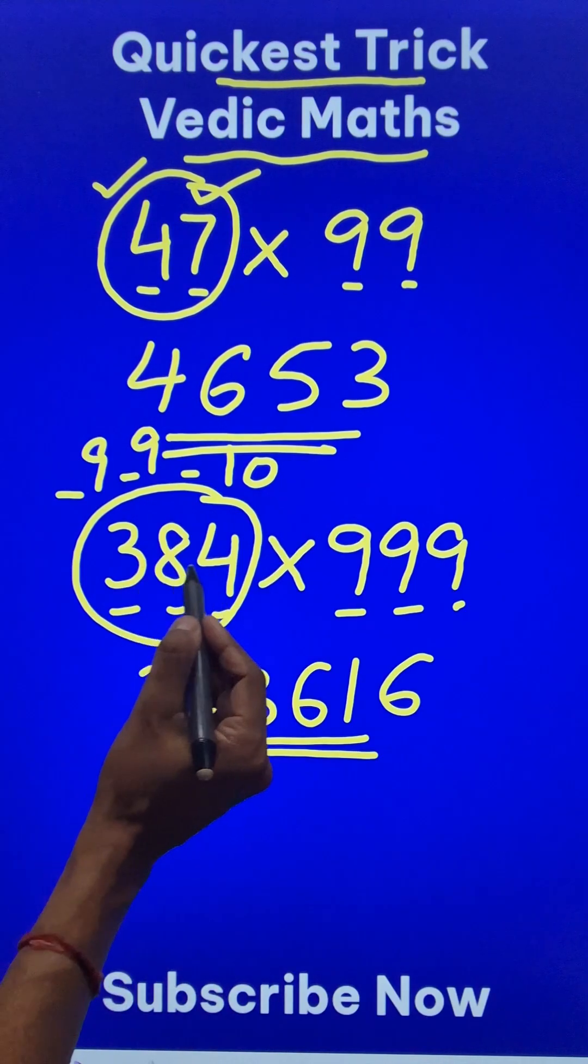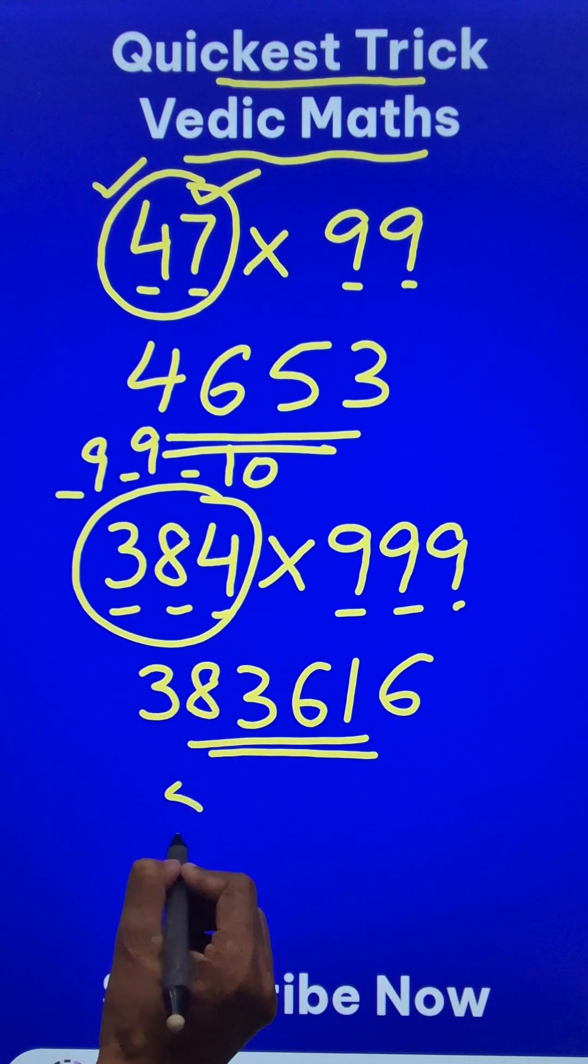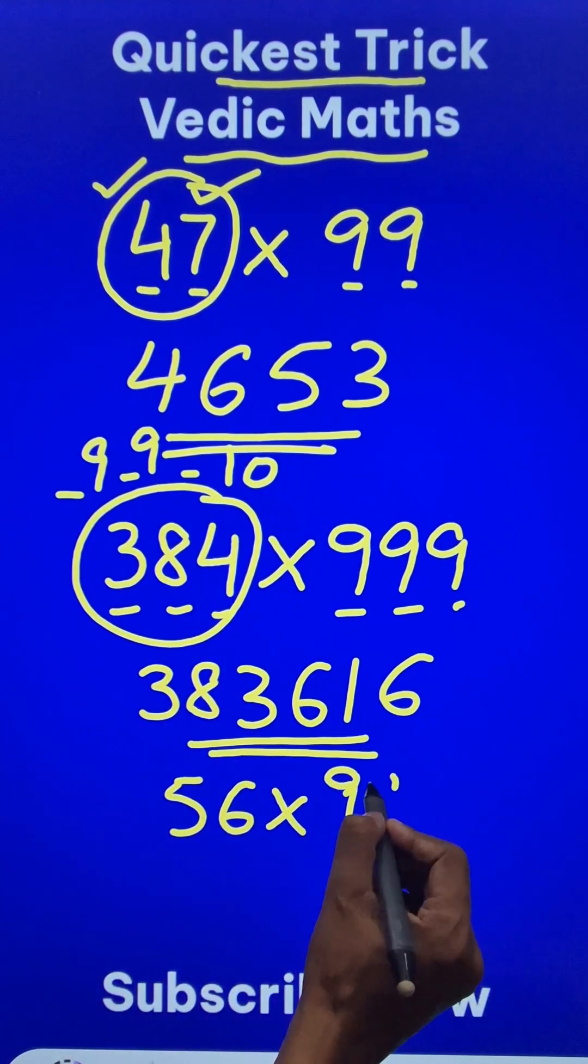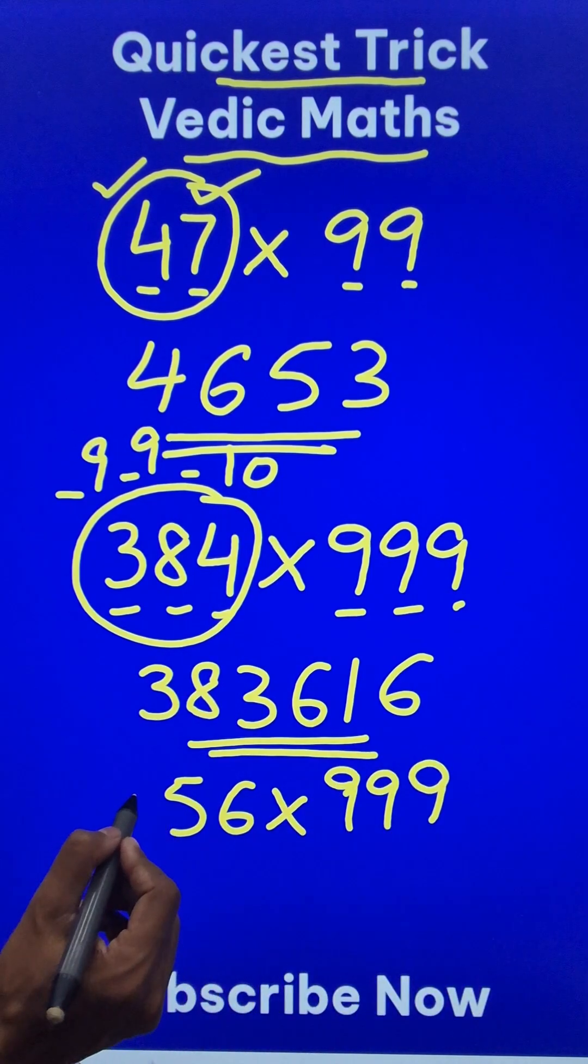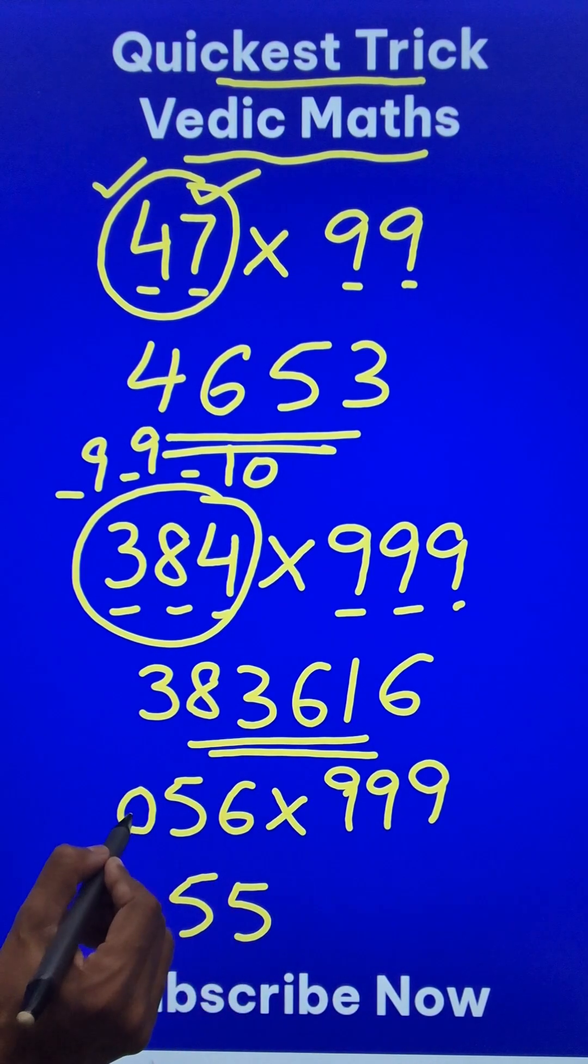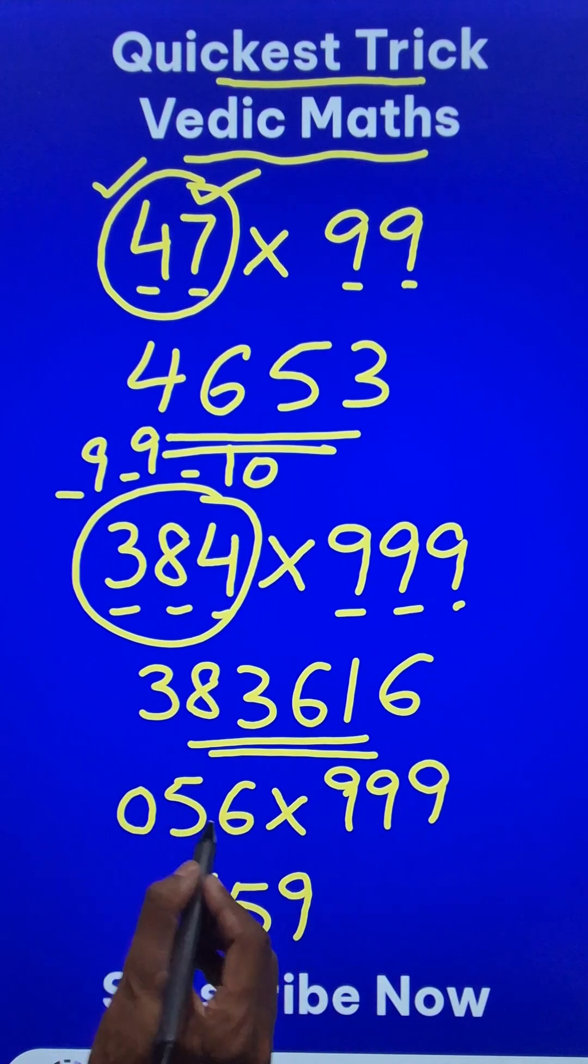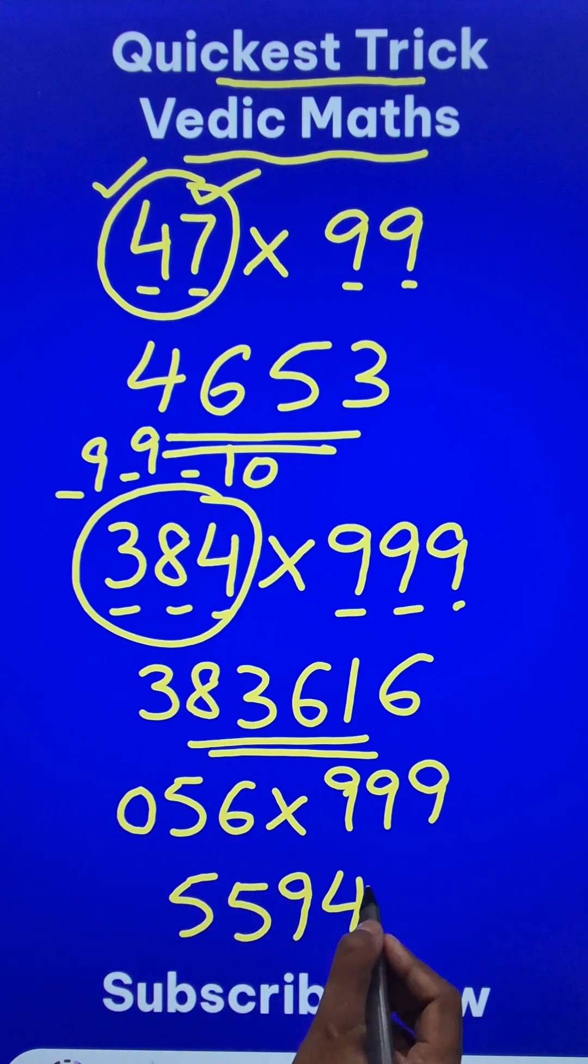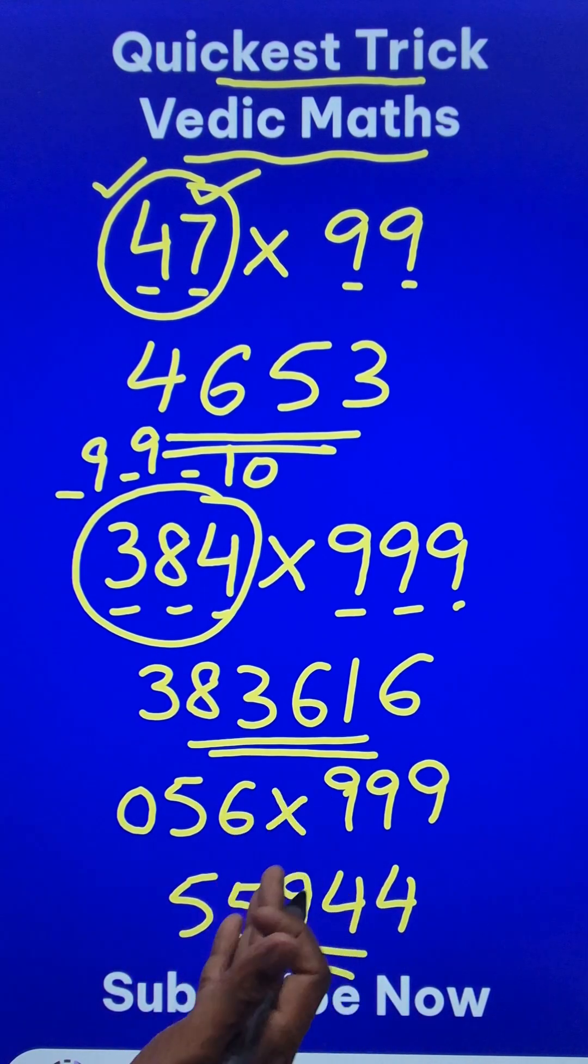Now suppose the number of digits here are less. Suppose you have to do 56 times triple 9. So you can equalize the number of digits by prefixing a 0. So 56 becomes 55 because you have to reduce it by 1. And then 9 minus 0 is 9. 9 minus 5 is 4. And 10 minus 6 is 4 again. And then you have the product again.